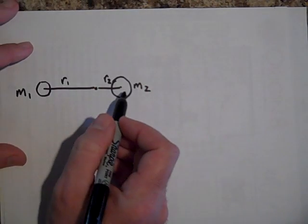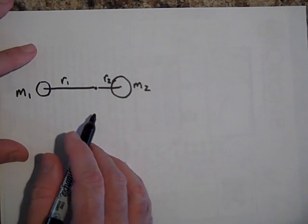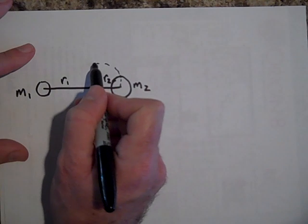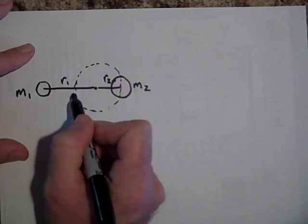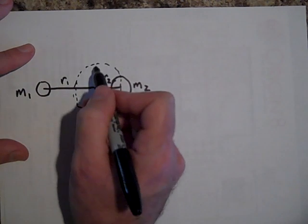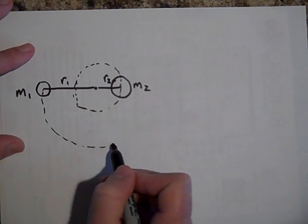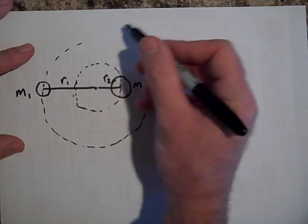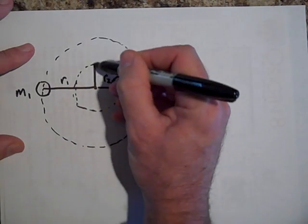And so the period of this around the center of mass is equal to the period of this around the center of mass. The circle that this is going to go in is going to look like this. Yikes. Kind of. R2. And this is actually going to go in a bigger circle. Something like that, where this is R1.